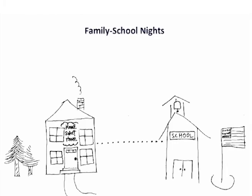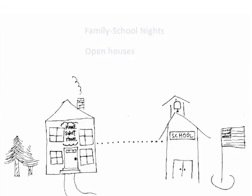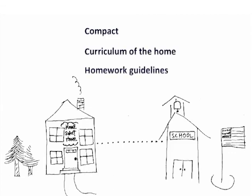As you can see, family school nights and other forums, including open houses, provide a great opportunity to convey to parents the impact that their involvement at home has on their child's success in school. By discussing the compact, the curriculum of the home, and the homework guidelines, parents learn what they can do to help their child succeed. And when they have dedicated space to meet, even better. In your workbook, we've provided tools to help plan for events that bring parents together.